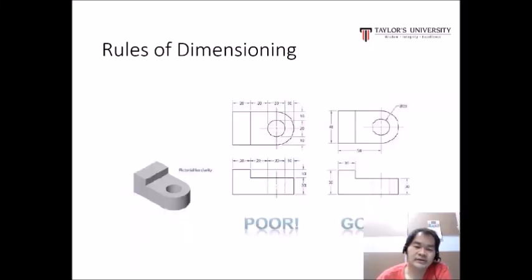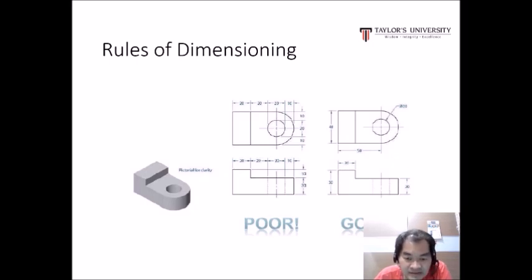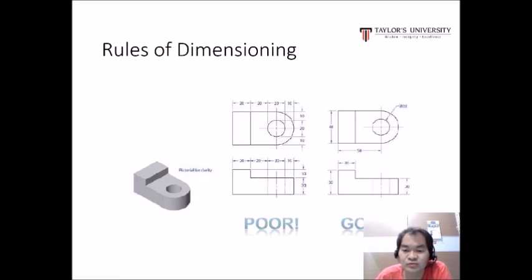When doing dimensions, make sure the same dimensions do not repeat. As you can see in the left hand figure, the dimensions are redundant — the value 20 appears on the front view but then appears again on the top view. For the right hand figure, the dimension information is minimum and adequate, which is correct — do not repeat.